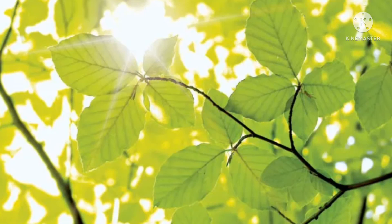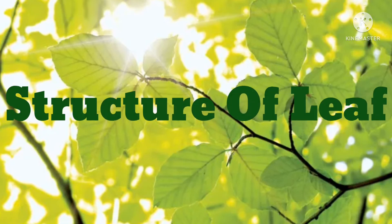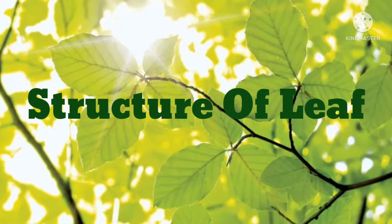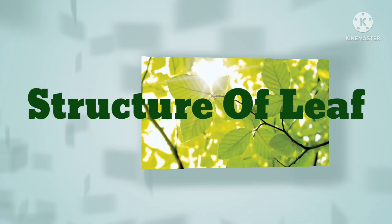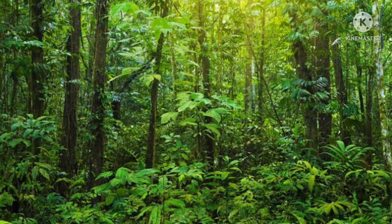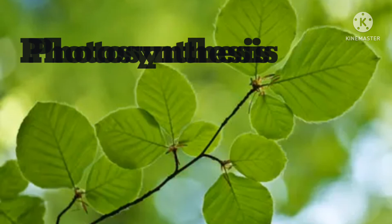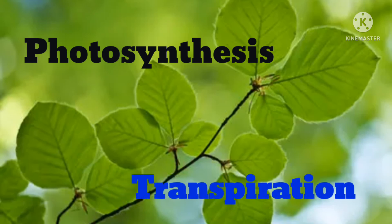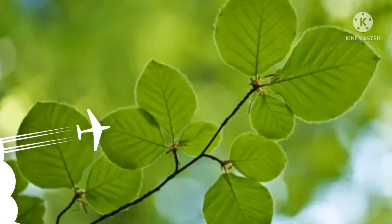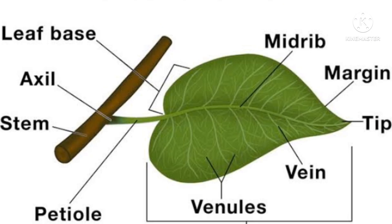Hello students and parents, welcome back to my channel. Today I am going to explain an important chapter of biology: the structure of the leaf. Leaf is the most important part of a green plant. It is a flattened green colored structure attached to the stem. Leaf is responsible for the two most important functions of a green plant: photosynthesis and transpiration. Now let's see what are the main parts of a leaf.